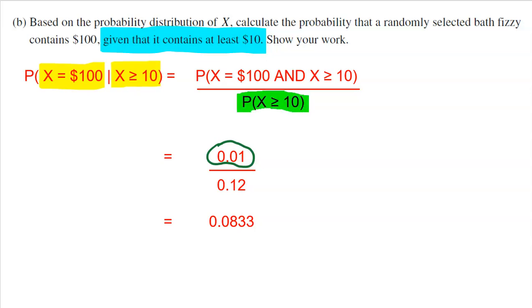So $100 and greater than or equal to 10 is 0.01. And then the denominator is the condition, just the condition, greater than or equal to 10, which again we just got done calculating. That was the 0.12. So divide and conquer, take 0.01, divide it by 0.12 and you get 0.0833. So you got about an 8.3% chance of getting $100 inside of your bath fizzy, given that that bath fizzy contains $10 or more.